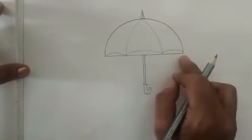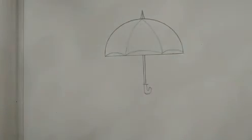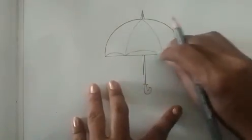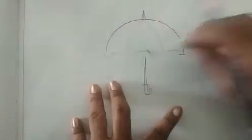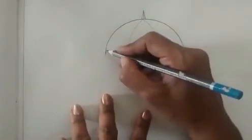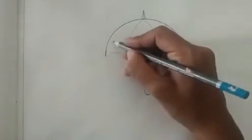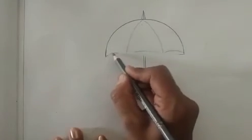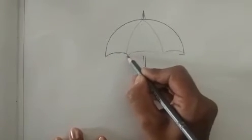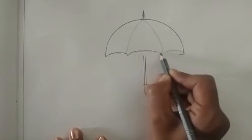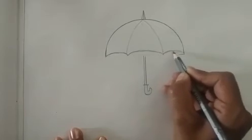We will erase the extra line here. And we will give a proper umbrella shape. And we will draw a half circle like this.